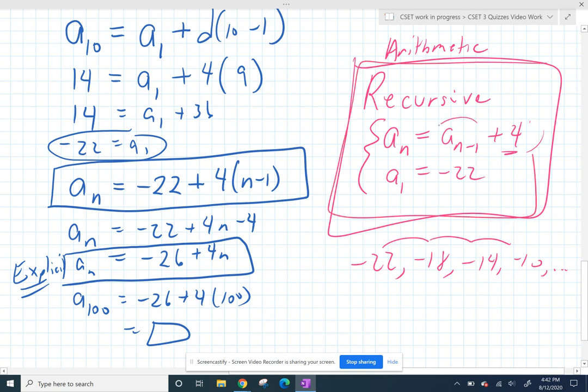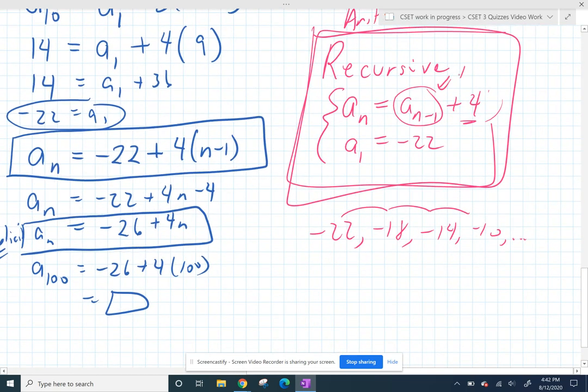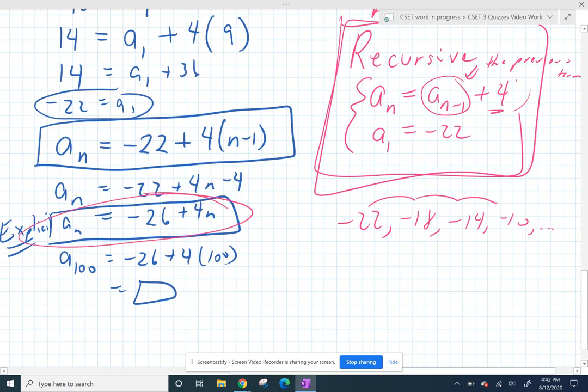People get scared of the notation. We get scared of the a sub n minus 1. Don't be scared. It's there every time. It just means the previous term. So even though it's a very natural way of talking about the series, it's not as functional as your explicit formula.